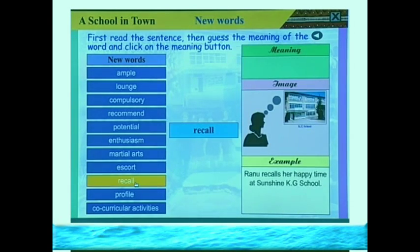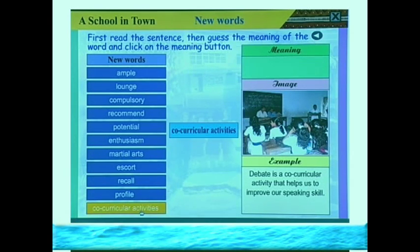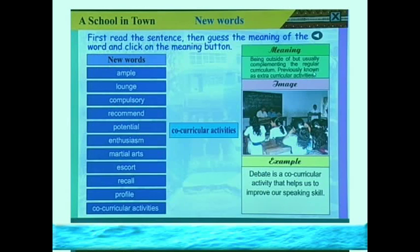The next word is 'recall.' Example: Rona recalls her happy time at Sunshine KG school. To recall means to remember something. The next term is 'co-curricular activities.' Example: Debate is a co-curricular activity that helps us improve our speaking skill. Co-curricular activities are things not related to our compulsory subjects but beyond them — we can call it a hobby. Students have to choose their hobby to fulfill their co-curricular activities.